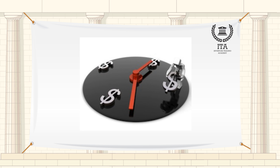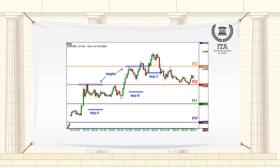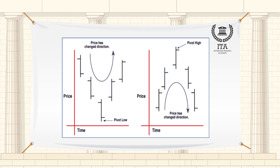Gann was fascinated by the relation of time and price. Gann drew his angles from all significant price pivot point highs and lows. He used just one pivot point to draw an angle that rose or fell at predetermined and fixed rates of speed.